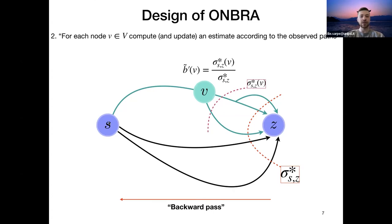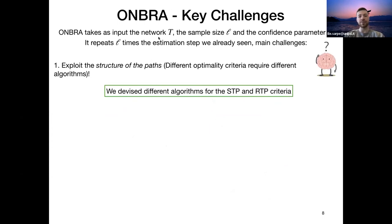Let me briefly argue our algorithm takes as input the temporal network, the sample size, the number of samples that it has to take. I call this parameter L and it repeats L times the procedure that we already seen. So pick a random pair of nodes and estimate all the temporal betweenness values of the nodes that are internal to the paths that we compute by sampling such pair of nodes. The main challenges that we addressed by developing such algorithm was to, in particular, take care of the structure of the paths under the two different optimality criteria that we considered. So we devised different algorithms in order to deal with the different aspects of such structure of the paths.